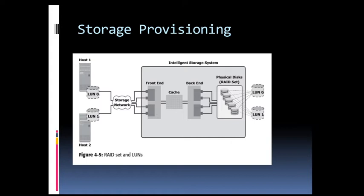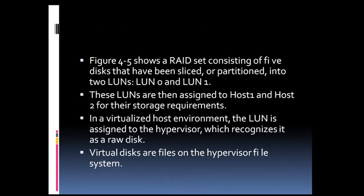The storage capacity is divided into two parts. When a LUN is configured and assigned to a non-virtualized host, a bus scan is required to identify the LUN. This LUN appears as a raw disk to the operating system. To make this disk usable, it is formatted with a file system and then the file system is mounted onto the system.